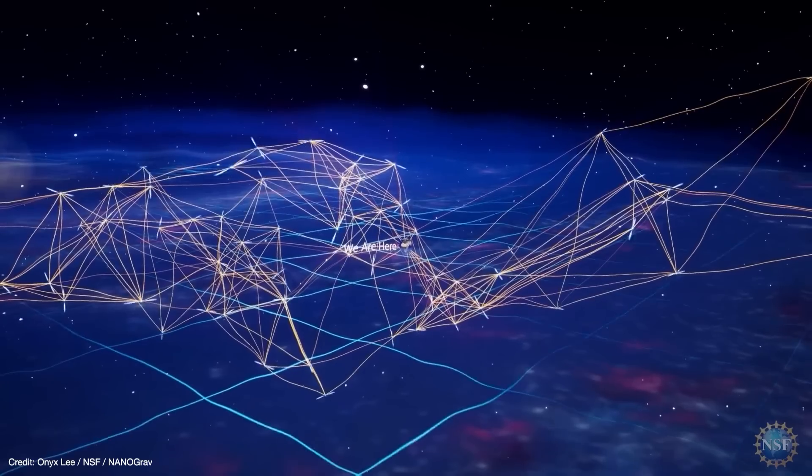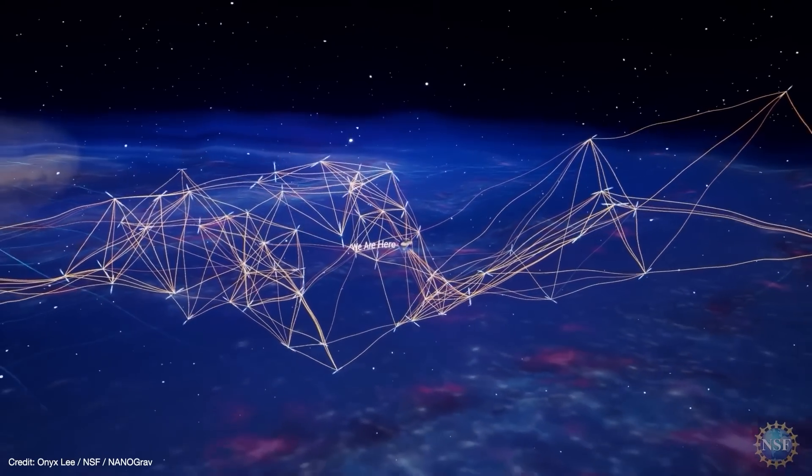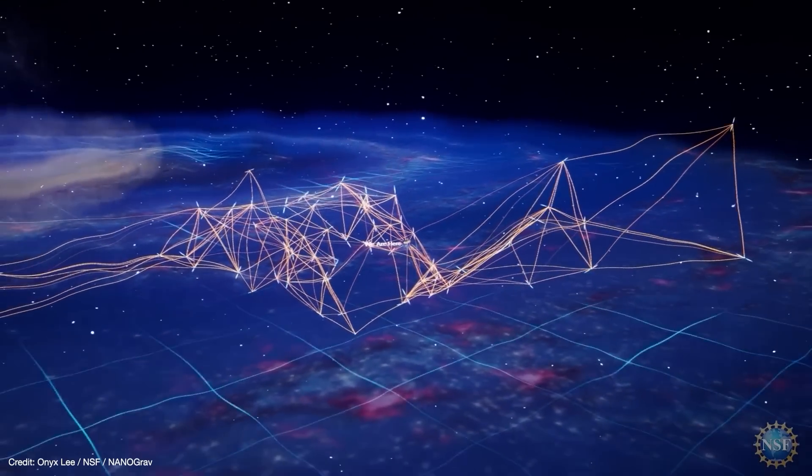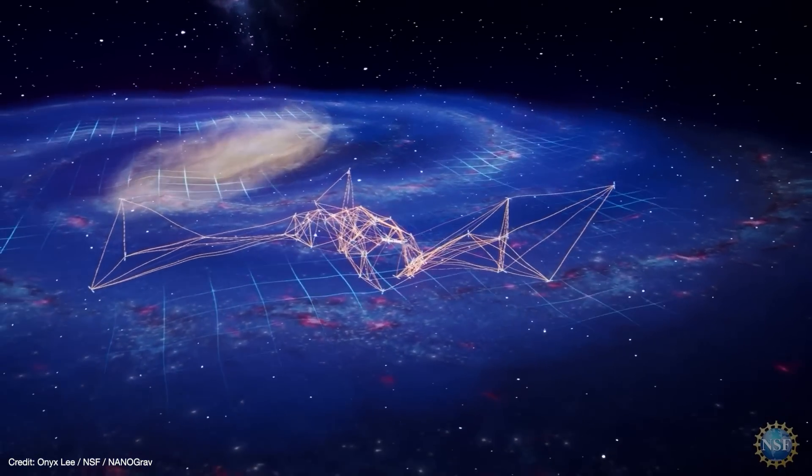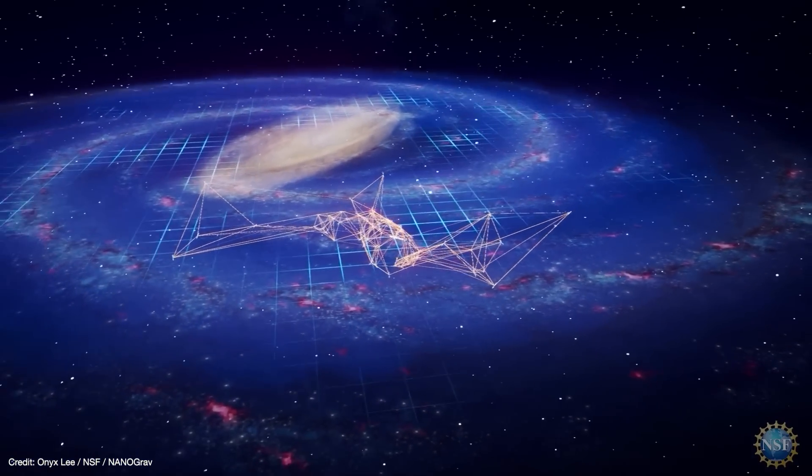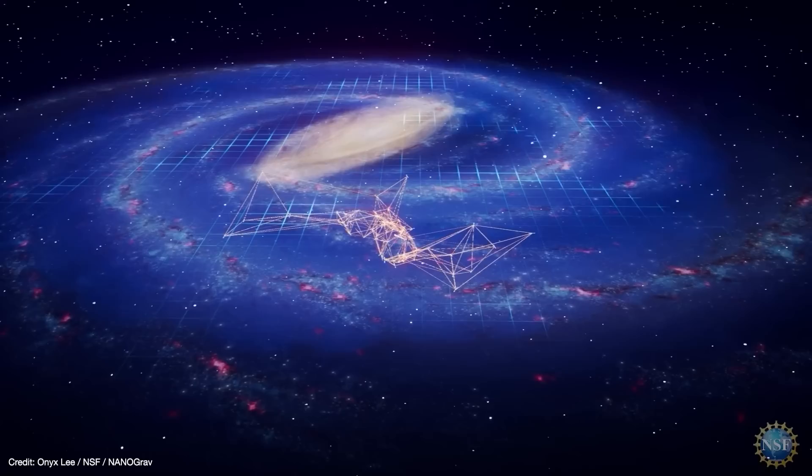Gravitational waves move at the speed of light, so we're talking about waves that are light-years in length. And that means you need a much larger detector with arms measuring tens, hundreds, even thousands of light-years. Fortunately, we can use pulsars to create a galaxy-sized gravitational wave detector.